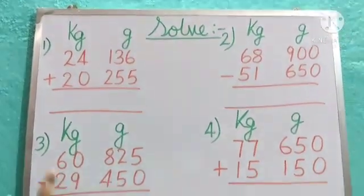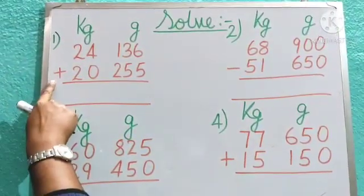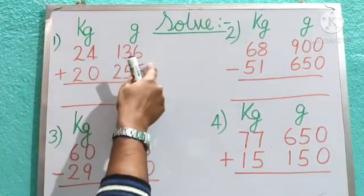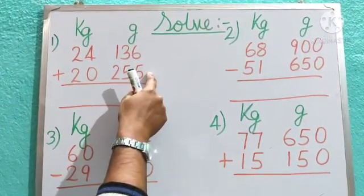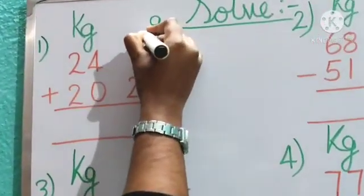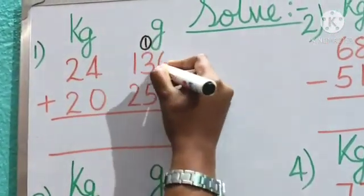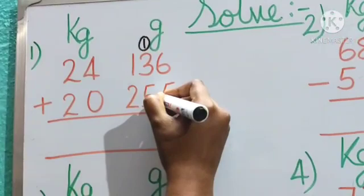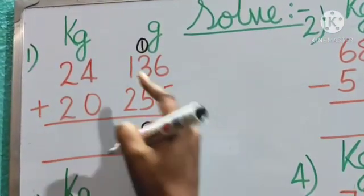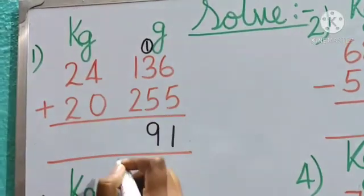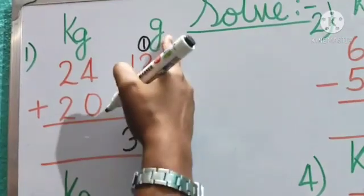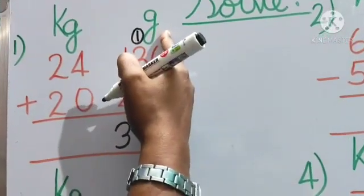Today we are going to solve addition and subtraction based on weight. Let us see number 1 question. We have to do the addition. So what is the first digit? 6 plus 5. Yes, 11 and again carry 1. We will write here. Now 3 plus 5, 8 and carry 1, 9. Now 2 plus 1. Yes, 3. So 391 gram.